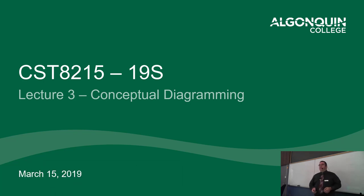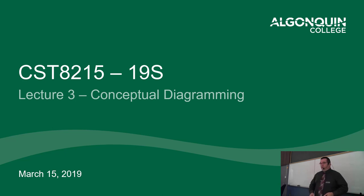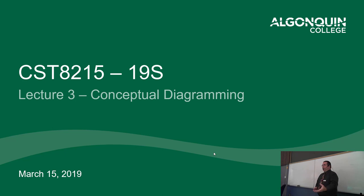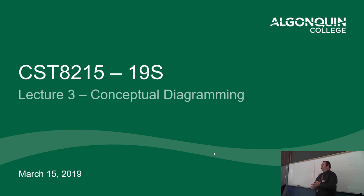Welcome to week four, lecture three. This week I'm going to start talking about conceptual diagramming and maybe physical diagramming afterwards. From the first lecture, we talked about the three kinds of diagramming most used in database design: conceptual, logical, and physical. Logical and physical are essentially the same thing, except one has defined data types and one does not.